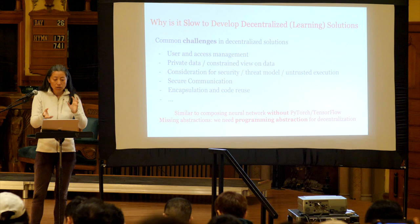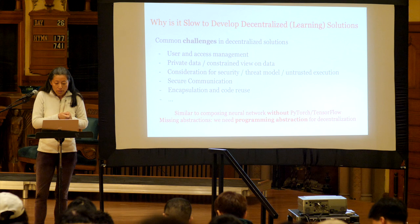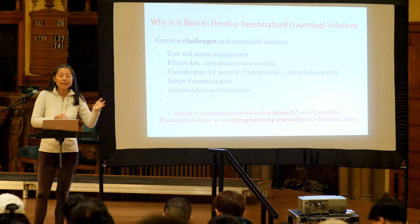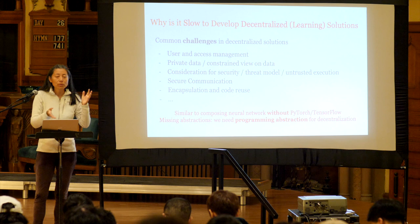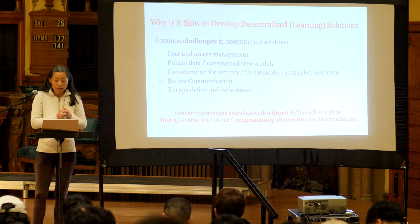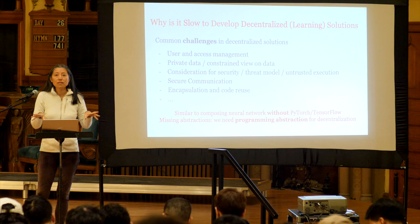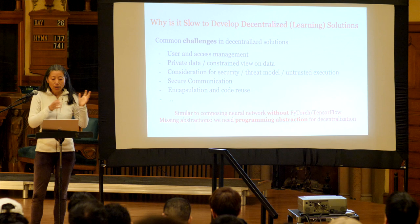A very similar analogy is: with deep learning, without PyTorch and TensorFlow in the early days, it was a lot more work to develop even simple neural networks and train them because there wasn't the right programming abstraction. Similarly, for what we call decentralized programming — developing these decentralized systems — we currently lack the right programming abstractions to make decentralized programming easy.